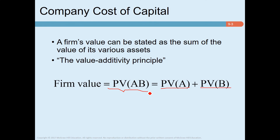A firm usually consists of different assets — for example, asset A and asset B. The value of the firm is simply the present value of cash flows from asset A plus the present value of cash flows from asset B, where each is valued as if it were a mini-firm. Investors value asset A by discounting its forecasted cash flows at a discount rate reflecting A's riskiness, and similarly for B. If the firm considers a third project C, it should discount C's cash flows at the expected rate of return investors would demand for a separate investment in C. The opportunity cost of capital depends on the use to which the capital is put.